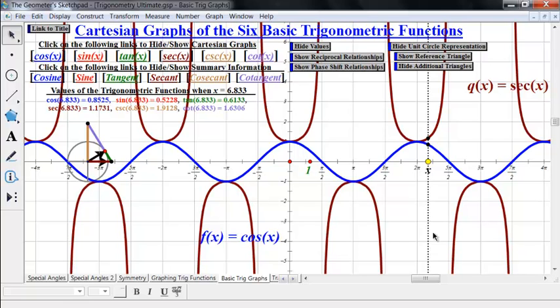The minima occur when y is 1, and that occurs at multiples of 2 pi: 0, 2 pi, 4 pi, 6 pi, negative 2 pi, negative 4 pi, and so forth. And the minima occur at the odd multiples of pi—pi, 3 pi, 5 pi is off screen, negative pi, negative 3 pi, and so forth.